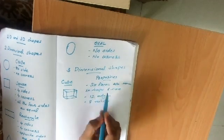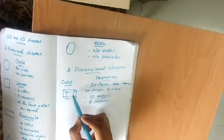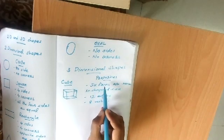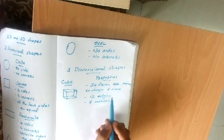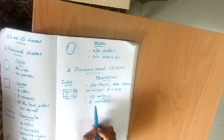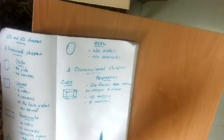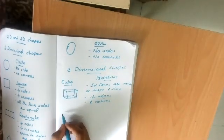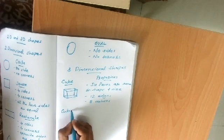So the properties of a cube are: six faces, all faces the same in shape and size, 12 edges, and eight vertices. The next 3D shape is the cuboid.